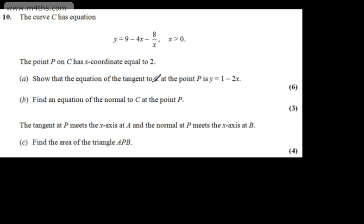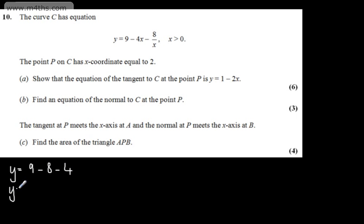For a tangent we need a straight line, which requires a point and a gradient. We have the x-coordinate, so we need to find the y-coordinate. When x equals 2, y equals 9 minus 4 times 2, which gives 8, then minus 8 over 2, which is 4. So the y-coordinate is negative 3, giving us point P with coordinates (2, -3).